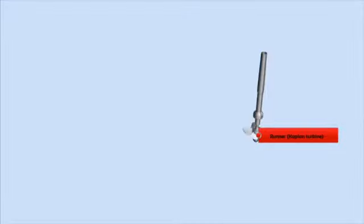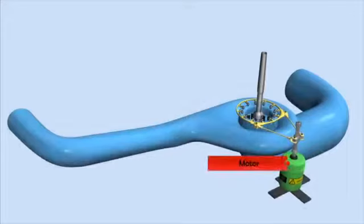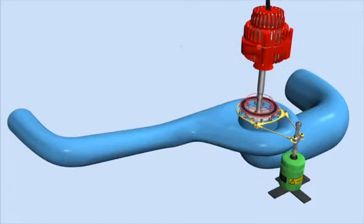The runner of a Kaplan turbine looks like a propeller or the screw of a ship. Adjustable pitch vanes enable it to work efficiently over a range of flow rates. The pitch vanes are driven via an electric motor. At one end of the turbine axle, a generator produces electricity when the runner is turning.